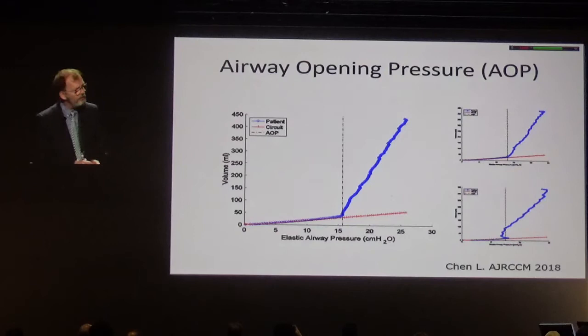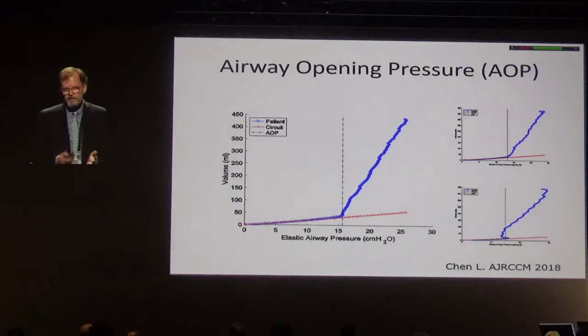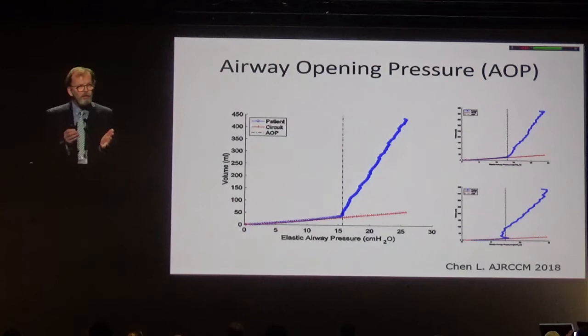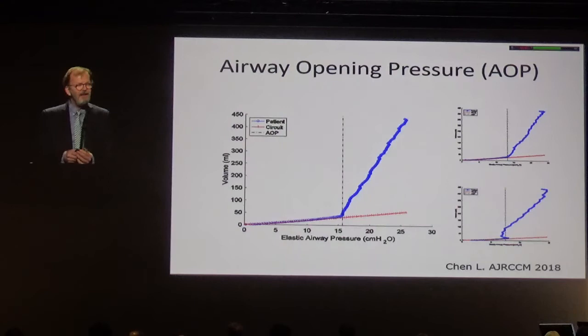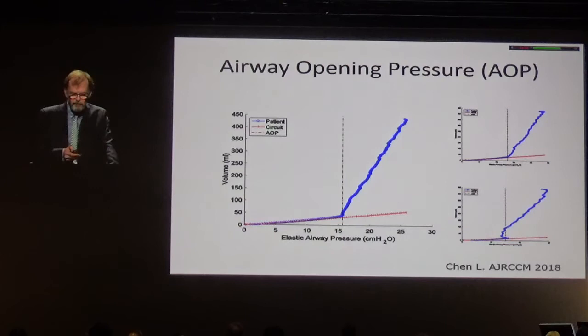We see two other examples with some oscillation after the first opening, which we could discuss as a phenomenon described as the avalanche phenomenon of airway opening. This indicates the airways are completely closed until you reach this airway opening pressure, which is not indicated by an end-expiratory occlusion used to measure intrinsic PEEP, because the airway opening pressure is much higher than the intrinsic PEEP measured in these patients.